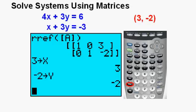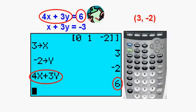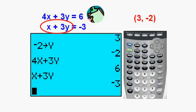We check our solution by storing 3 for x and negative 2 for y. We press 3 storage x, then enter, then negative 2 storage y, then enter. The storage key is just above the on key. We try out our first equation by pressing 4x plus 3y, then enter. We see that we have 6, the same as for our original equation. Check. Now we enter the left side of the second equation, x plus 3y, and press enter. We see that negative 3 matches the negative 3 on the right side of the original equation. Check. We have proven our solution.